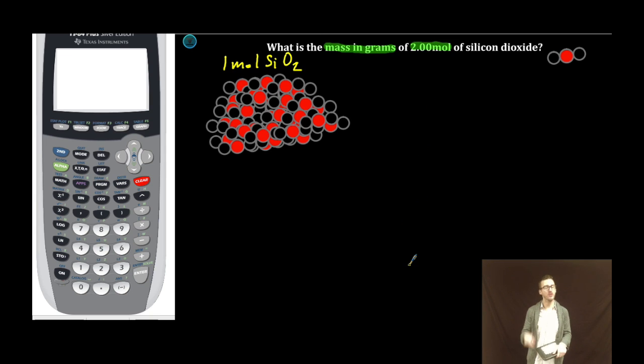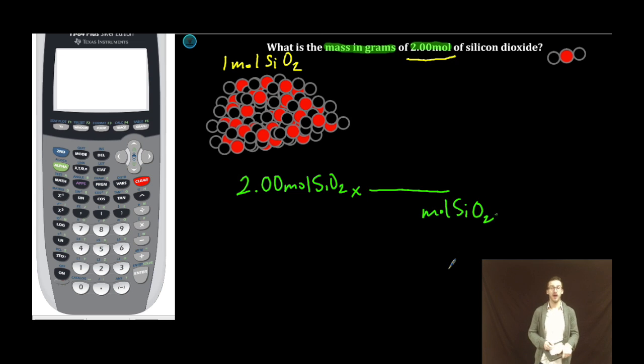but I do know with the conversion I'm always gonna start with the amount that I'm given. In this case, 2.00 moles SiO2. If I'm gonna set up a conversion here to cancel out moles of silicon dioxide, I'm gonna put that sucker on the bottom. And I'm looking for grams of SiO2.